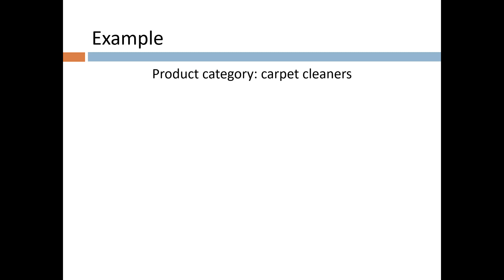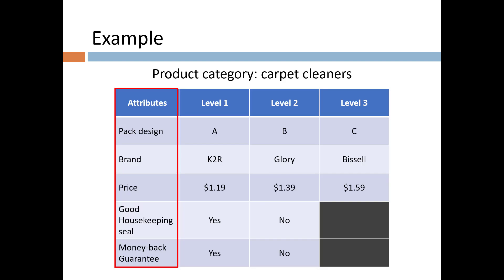Let's take an example using carpet cleaners as a product category. A conjoint analysis study starts by listing attributes of the product category. These are attributes that can affect preference and that the manufacturer can vary. In our case, we are going to list five attributes: pack design, brand name, price, the good housekeeping seal, and a money-back guarantee.